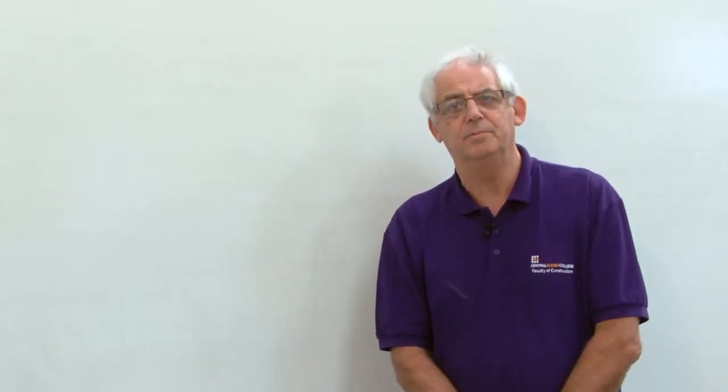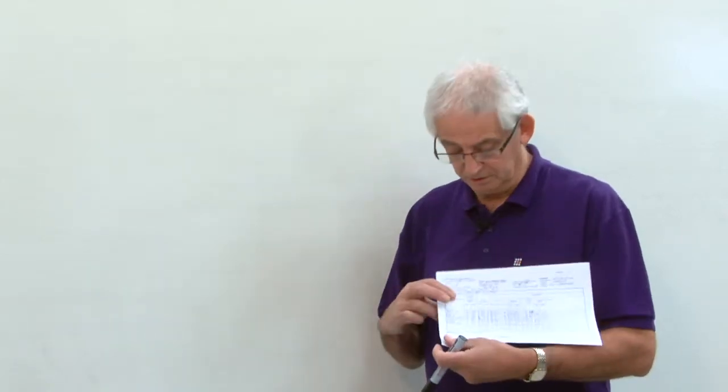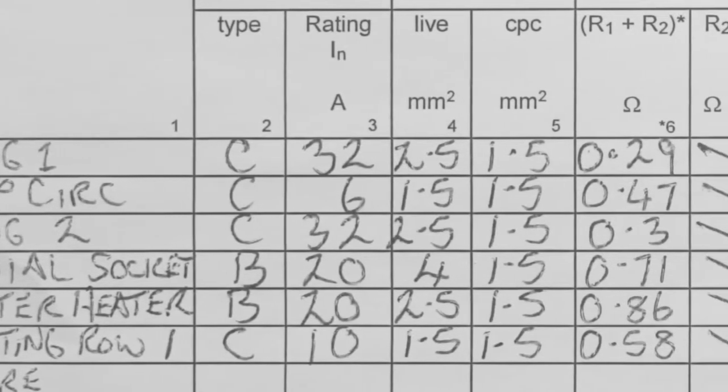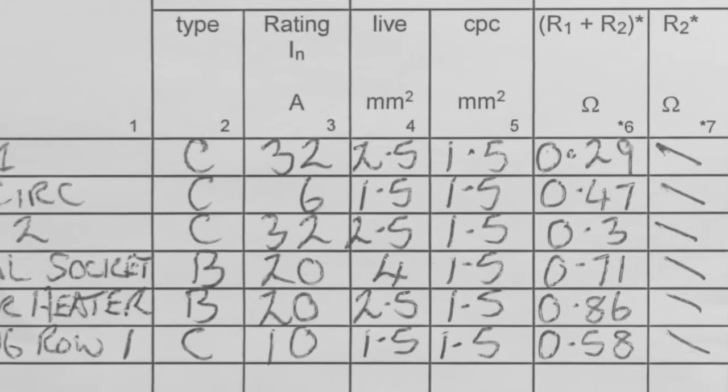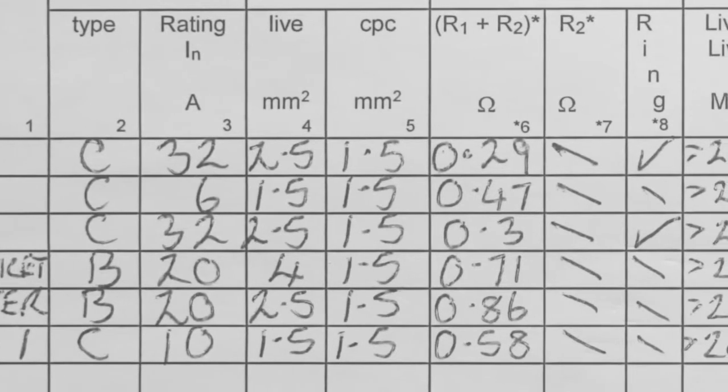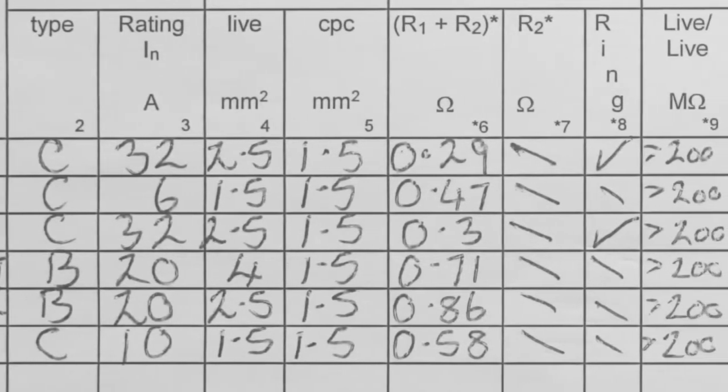However, because when we're doing a periodic inspection we've got certain values on our certificates, we can use those values to help us in calculating volt drop. For instance, on this certificate here I've got various circuits and if we take circuit 4 we've got a 20 amp circuit wired in 4mm with a 1.5 CPC and we've got an R1 and R2 value of 0.71. That's all the information I need to calculate the volt drop in that circuit.